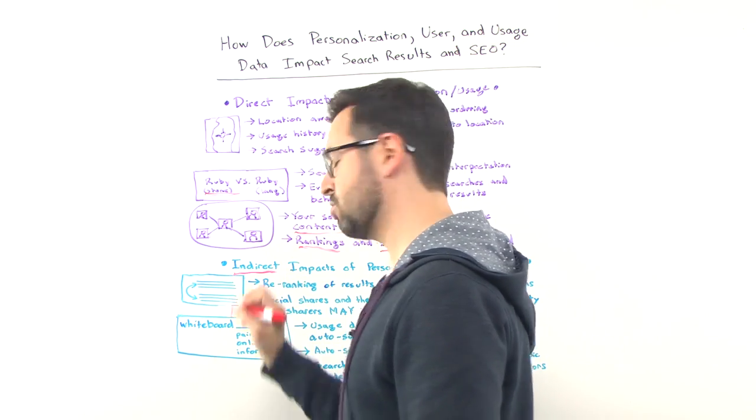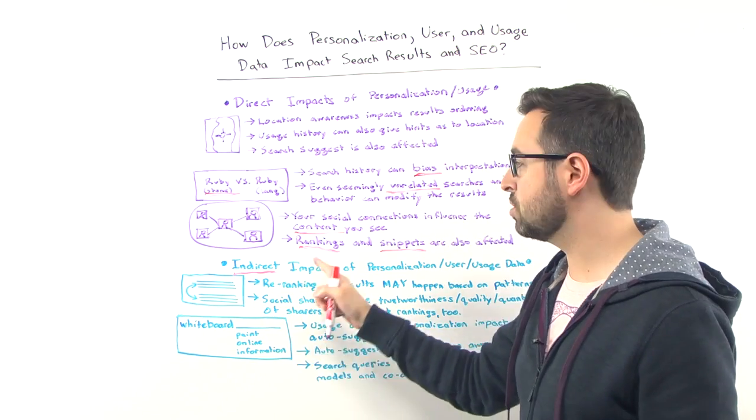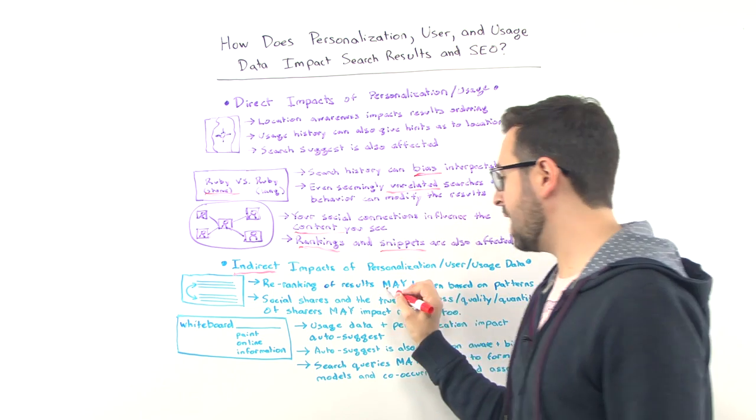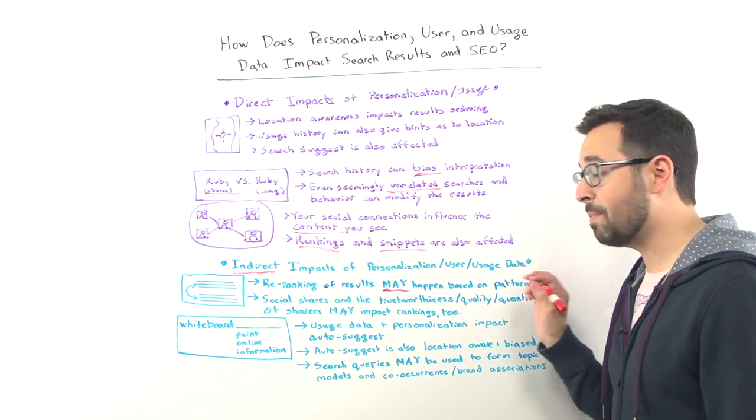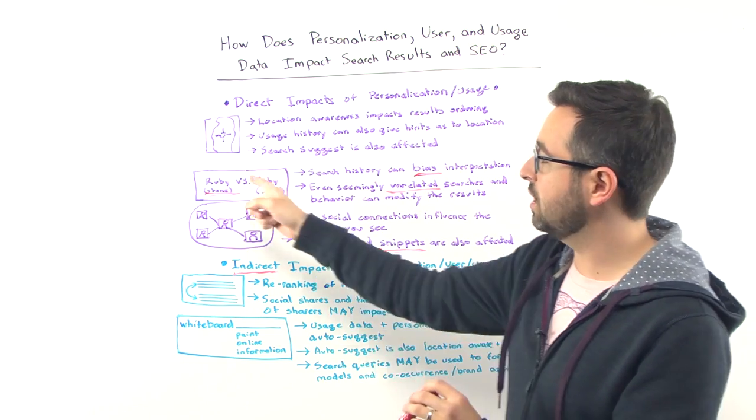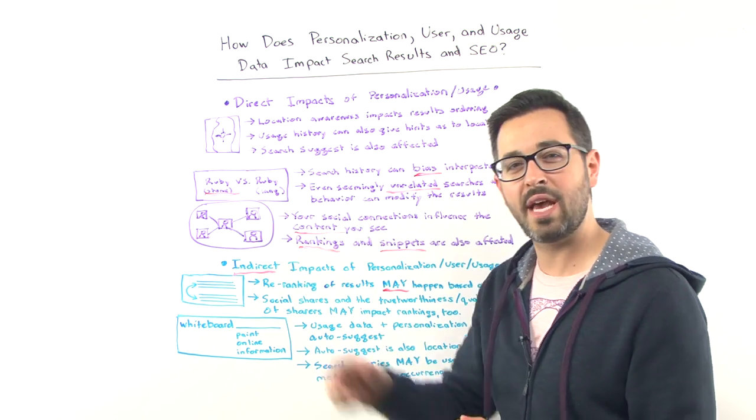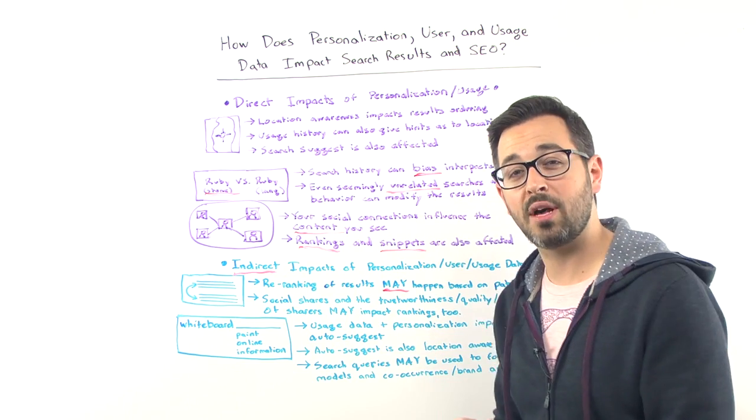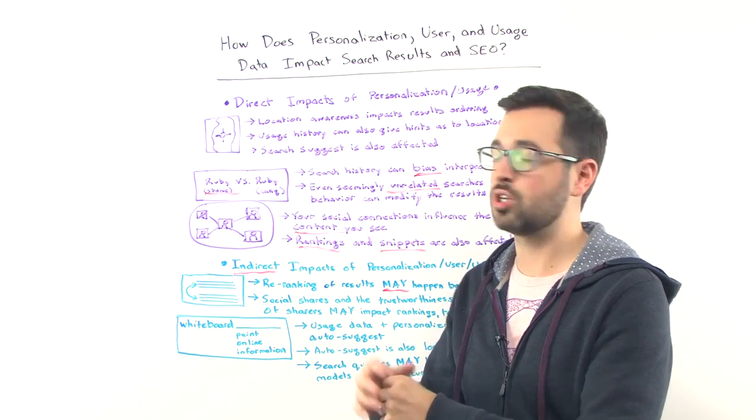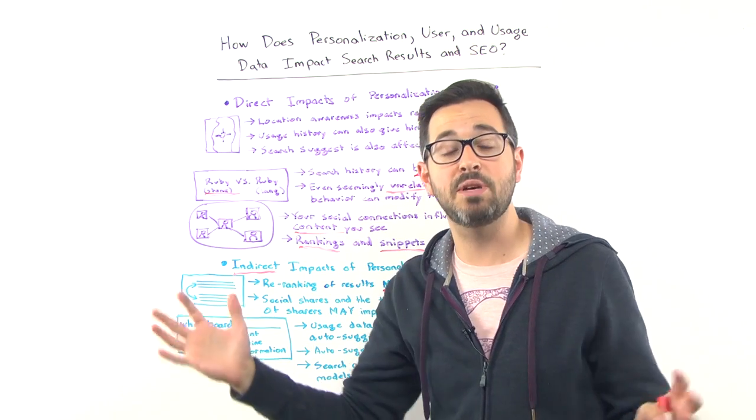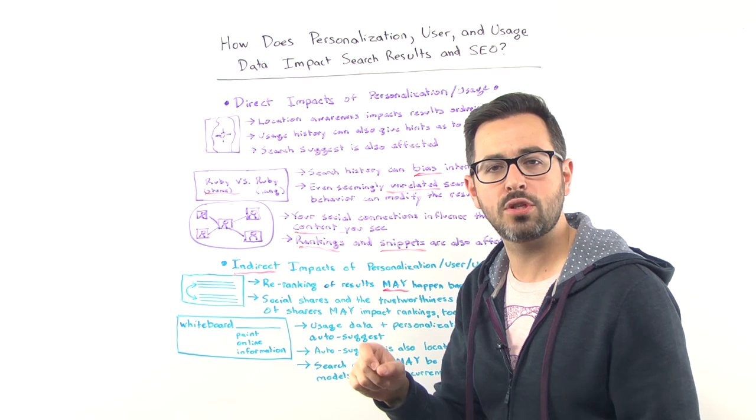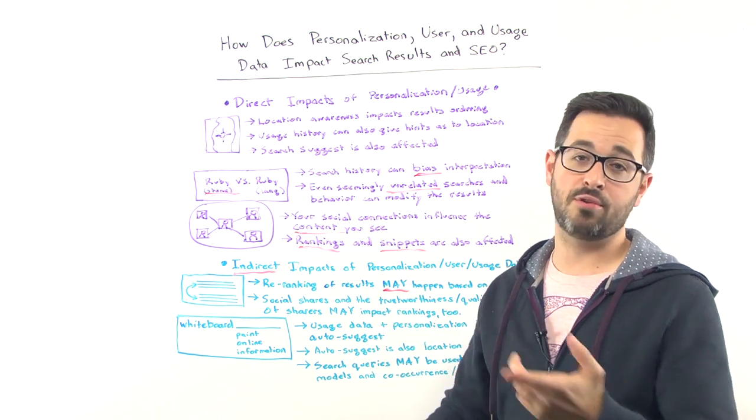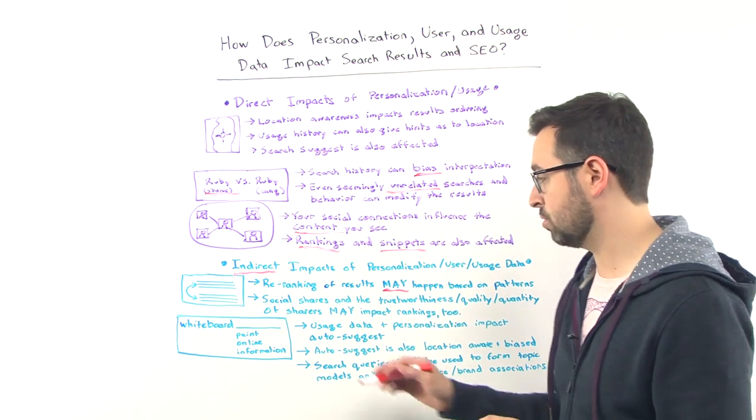What about some indirect impacts? There's actually a few of these that are worth mentioning as well. One of those indirect impacts that I think is very important is that you can see re-ranking of results not just based on your usage, but this can happen or may happen, not for certain, but may happen based on patterns that the engines detect. If they're seeing that a large number of people are suddenly switching away from searching Ruby the gemstone to Ruby the language, they might bias to say, you know what? By default, we're going to show more results or more results higher up about Ruby the programming language. Or if they're seeing a lot of people in a lot of geographies, not just Seattle, when they perform a CoffeeWorks search, are actually looking for Seattle CoffeeWorks because that brand has built itself up so strongly, you know what? We're going to start showing the Seattle CoffeeWorks location over the other ones because of the pattern matching that we're seeing. That pattern matching can be a very powerful thing, another great reason to build a great brand, have a lot of users, get a lot of people around your product, your services, your company.